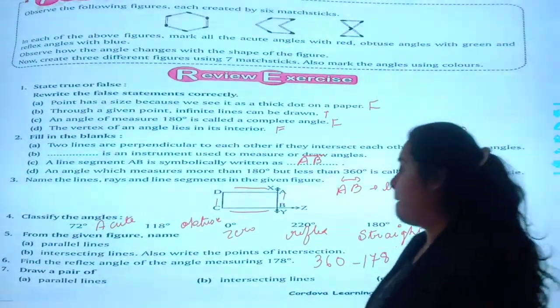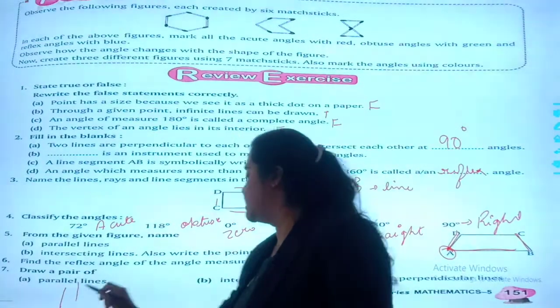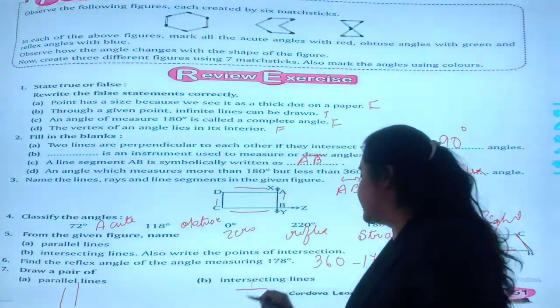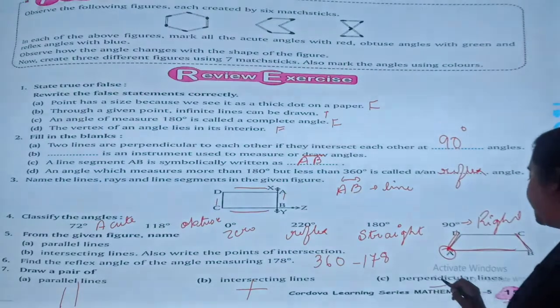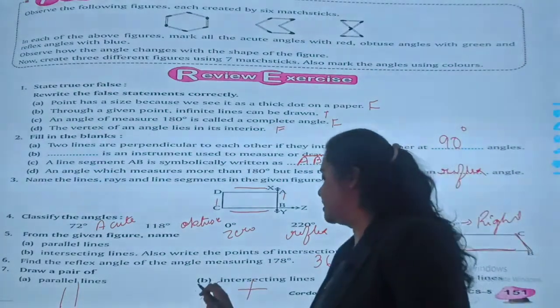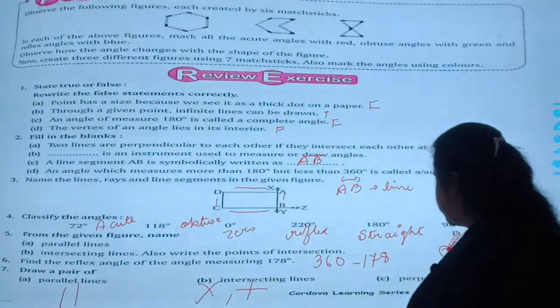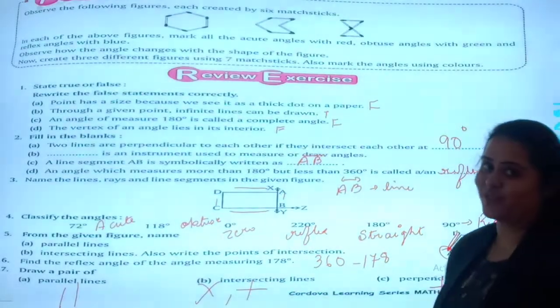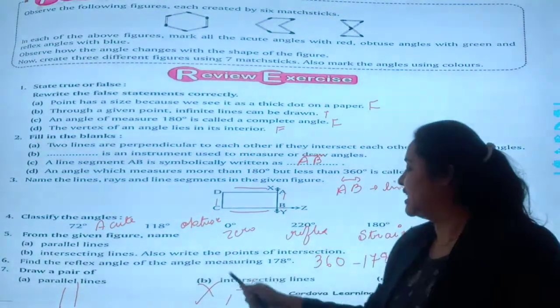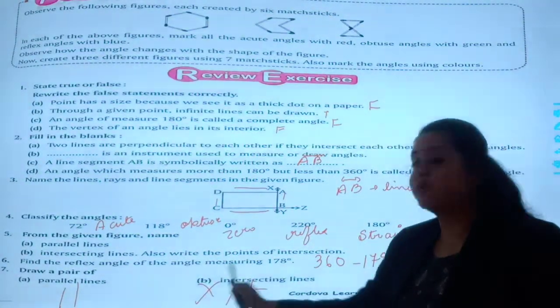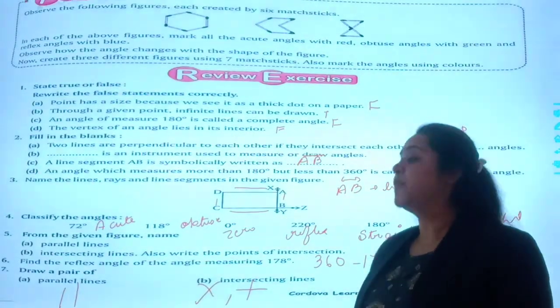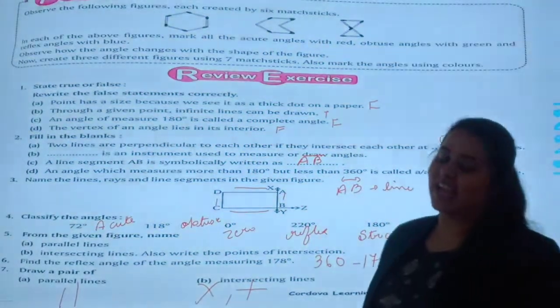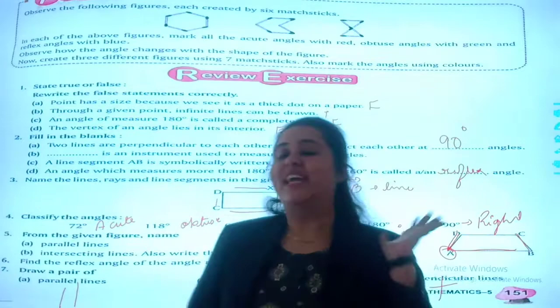And the last is, draw a parallel lines, intersecting lines, or four parallel lines. Simply I have drawn the rough pair so you can come to know this is the parallel lines, intersecting I have drawn. So finally, we complete chapter number nineteen.